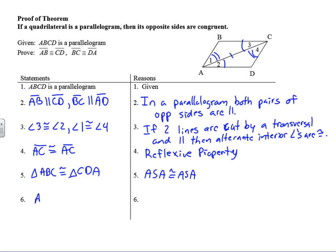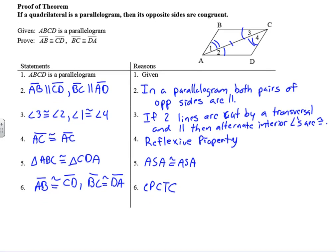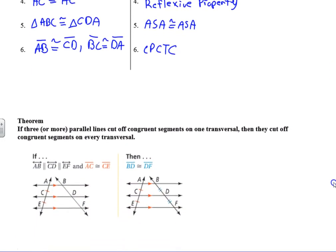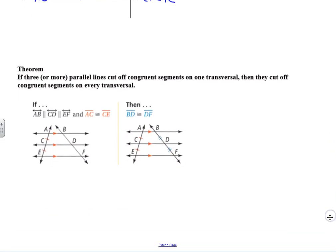Triangle ABC is congruent to triangle CDA by Angle-Side-Angle. Therefore, AB is congruent to CD, and BC is congruent to DA by corresponding parts of congruent triangles are congruent. We've just proved that reason. In future instances, you'll be able to say directly that opposite sides are congruent because it is a property of parallelograms.